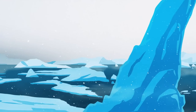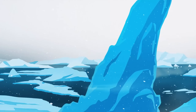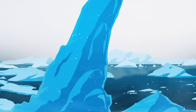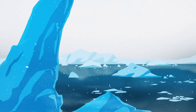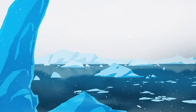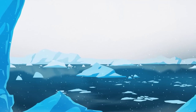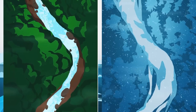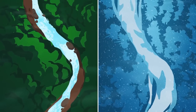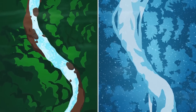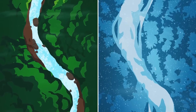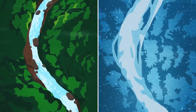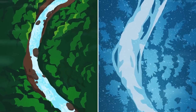Like all glaciers, the Bering Glacier began as a mass of ice that was compressed by immense pressure under accumulating snow. Glaciers, like rivers, gradually move from high to low elevations, constantly shifting and eroding the landscapes around them.